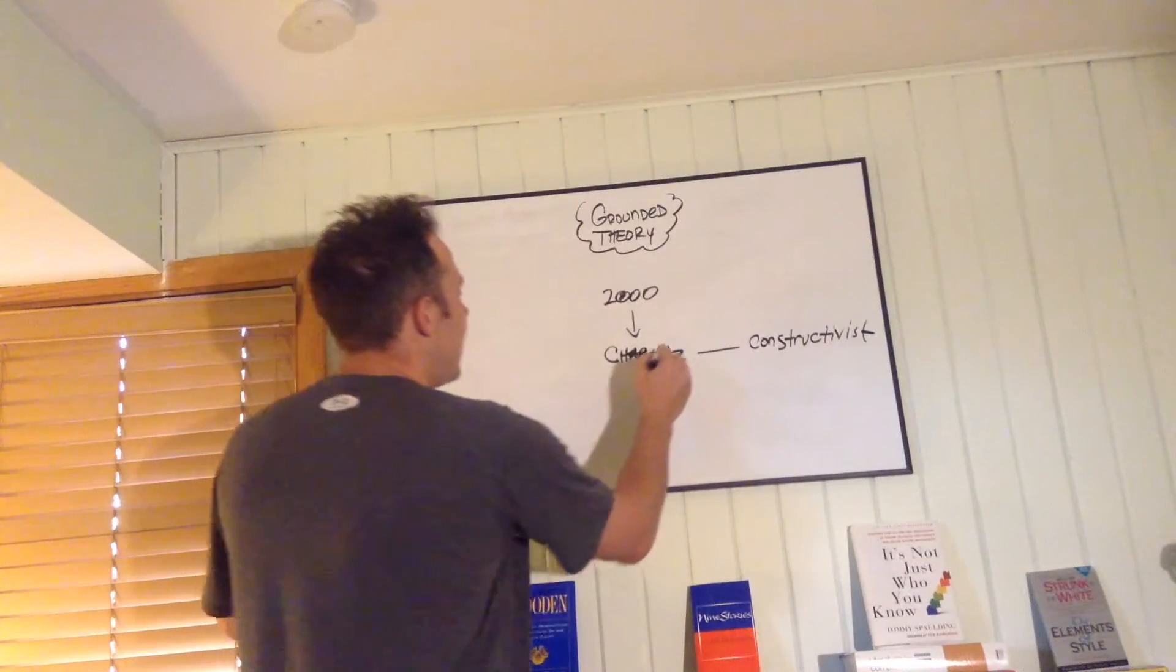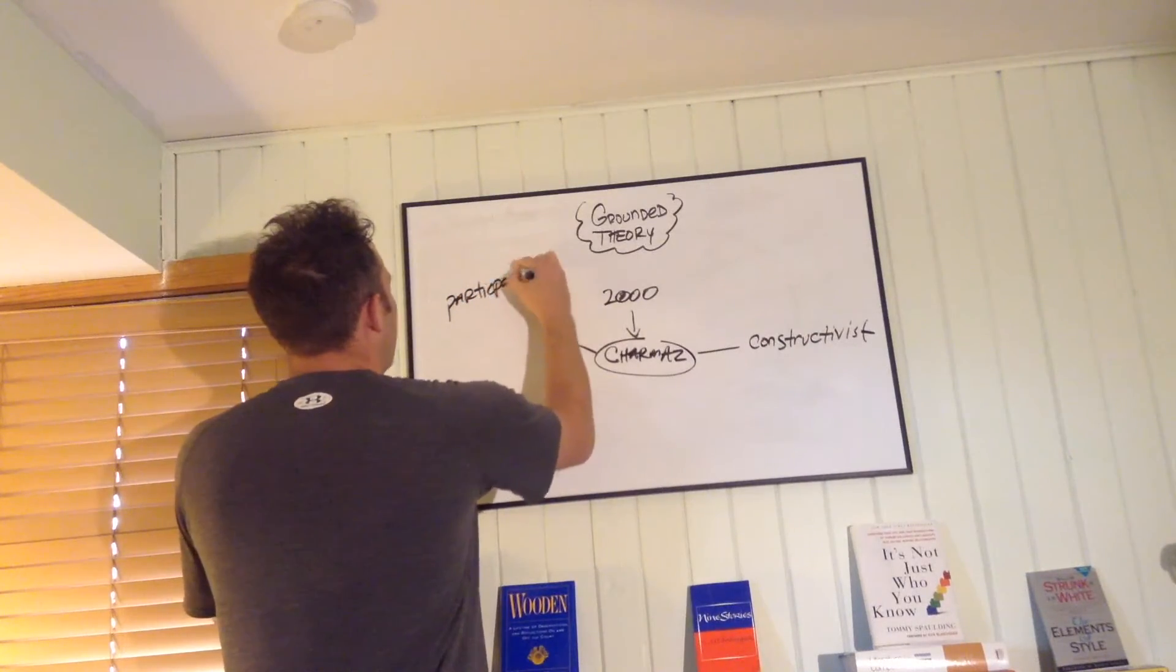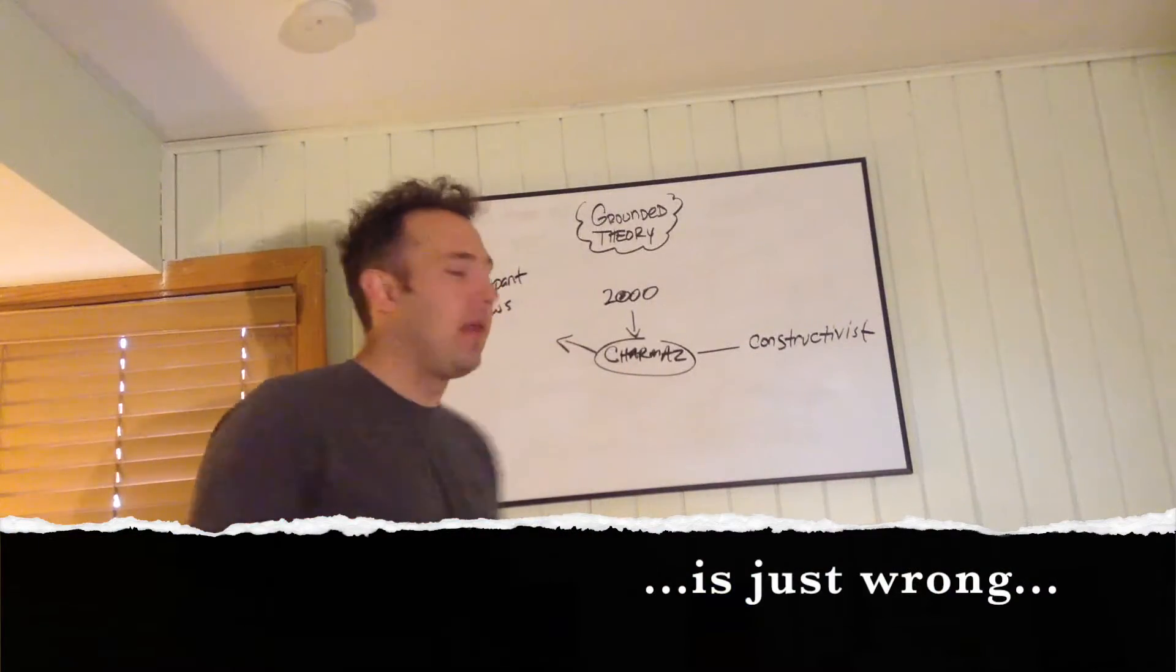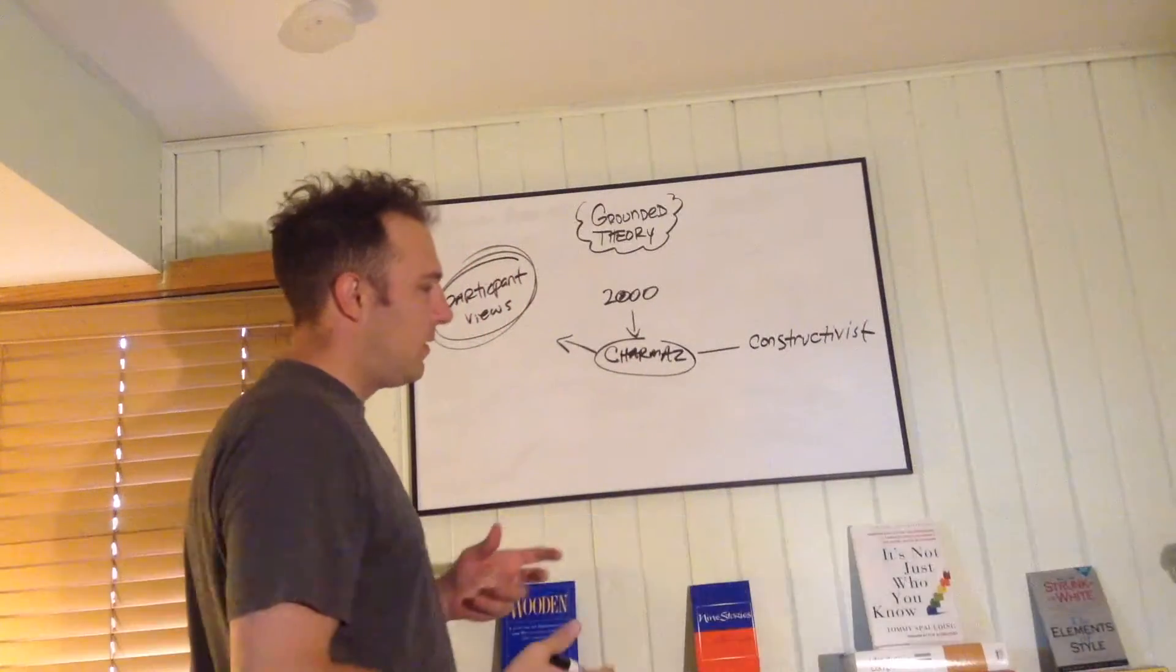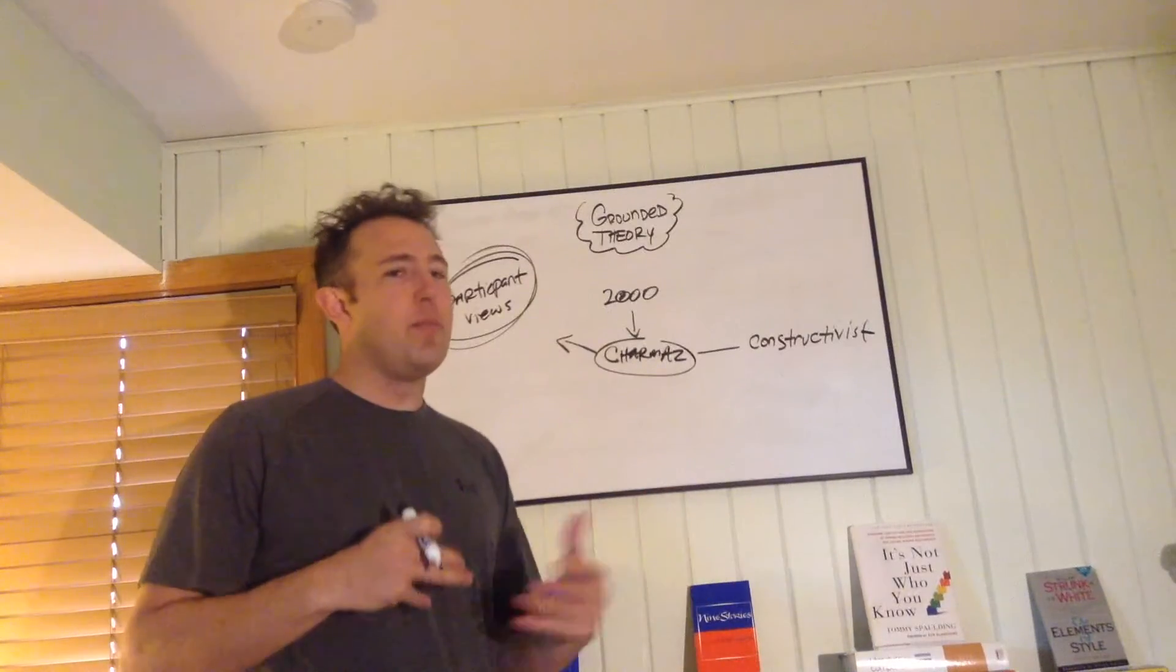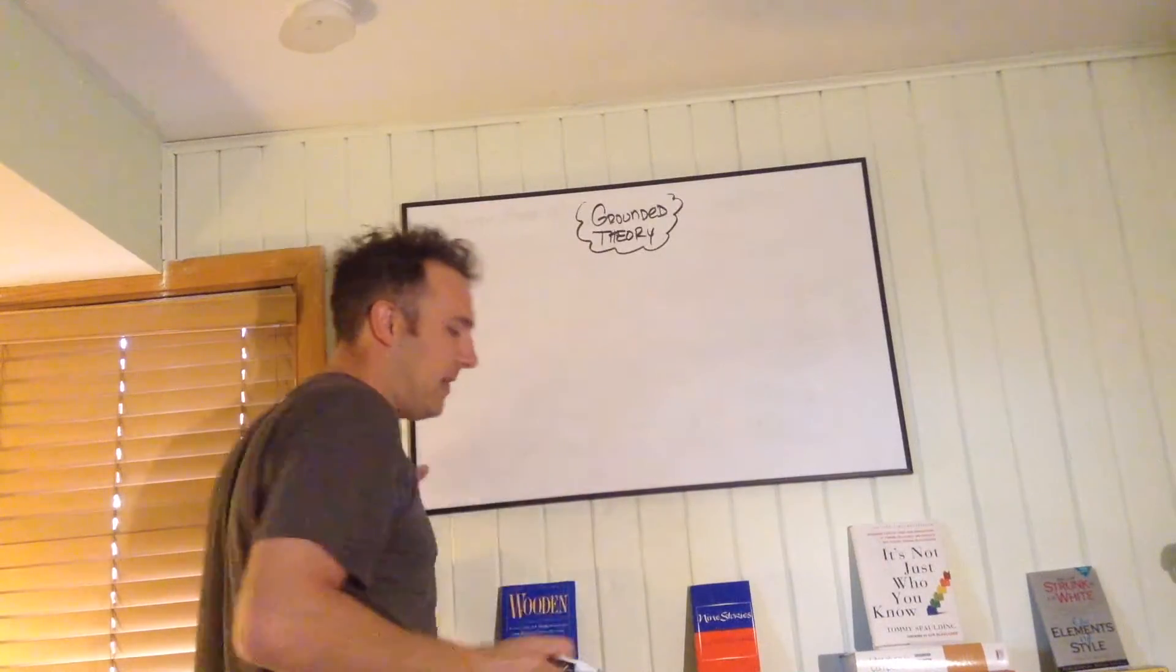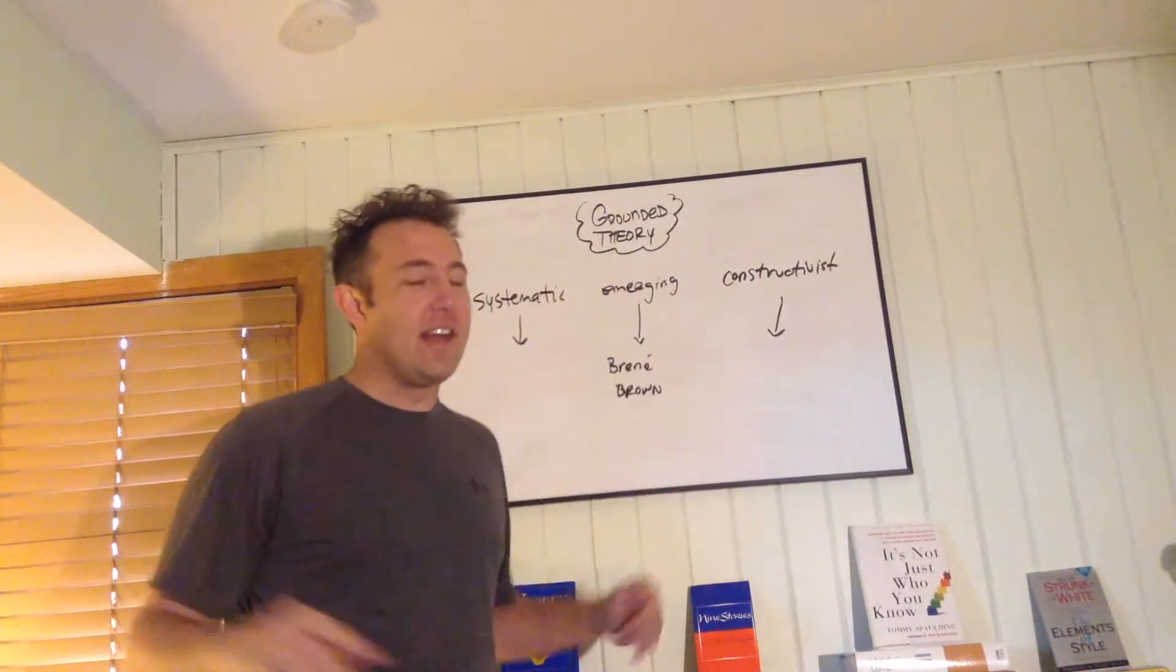And it's somewhere in between the two, between Strauss and Glasser. But the main theory here is that it needs to focus on participant values, beliefs, things like that. Sharmaz also says that the researcher brings values, experiences, and priorities to the research process, and she qualifies that by saying any conclusions developed are suggestive, incomplete, and inconclusive. Important to notice, and this is part of the ethical issues involved with grounded theory, you can't ever remove the researcher bias from the theory, from the data, from the observations. So currently, in the year 2016, there seems to be a few more designs, but these are the three primary designs of grounded theory.